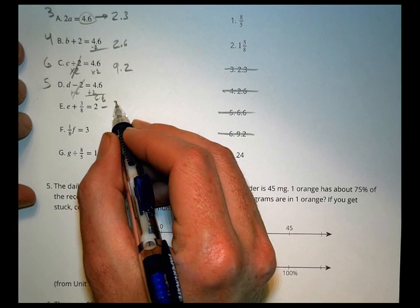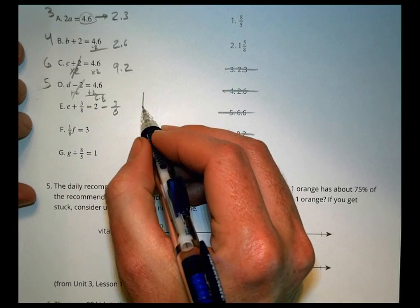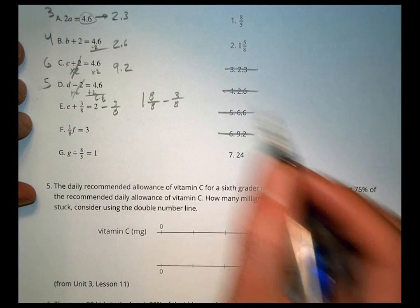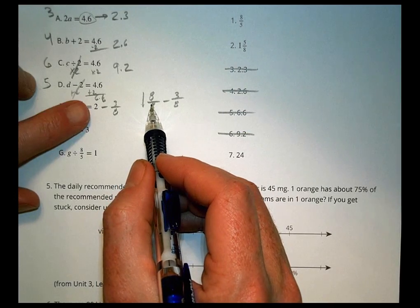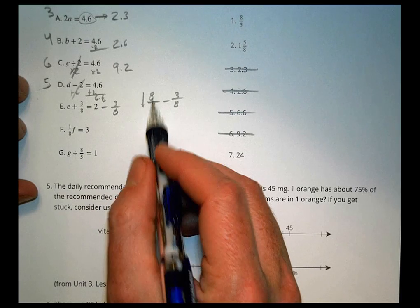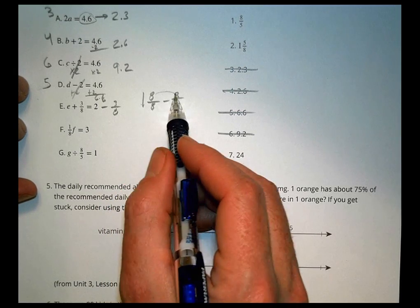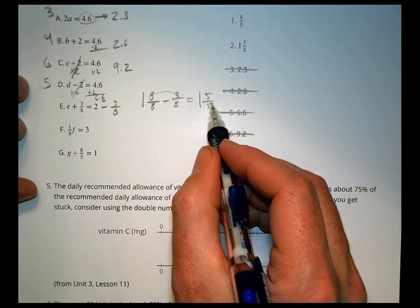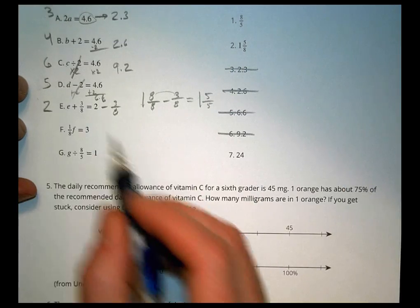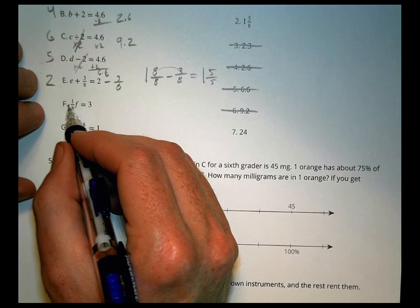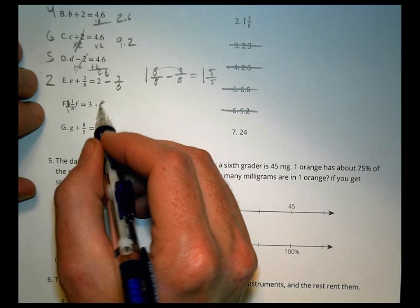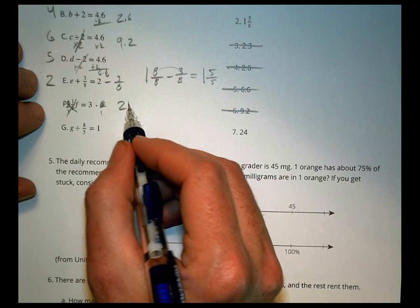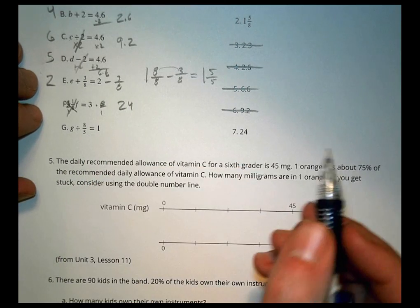We're going to subtract 3 eighths. So again, this becomes like 1 and 8 eighths minus 3 eighths. Because 1 and 8 eighths is still 2. I just take the denominator, make the same as the numerator. Then I can subtract 8 minus 3 is 5. So I have 1 and 5 eighths left over, which is 2. Here, I'll multiply by the reciprocal, 8 over 1, 8 over 1. That cancels. 3 times 8 is 24. And that's all there is to it.